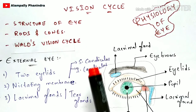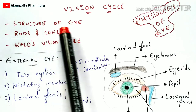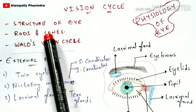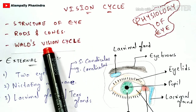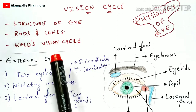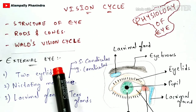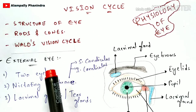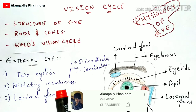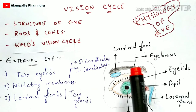So firstly let us discuss about the structure of the eye, then let us enter into rods and cones and Wald's vision cycle. I am going to explain you about the external structure as well as the internal structure.